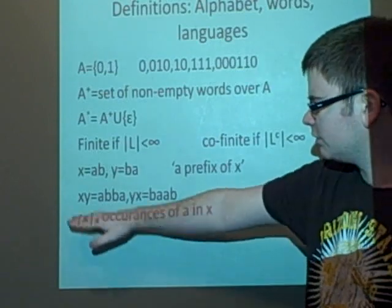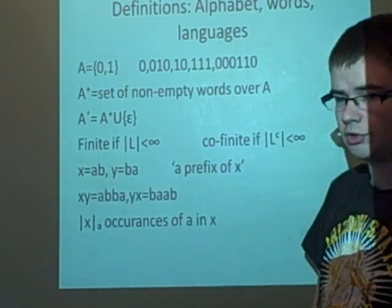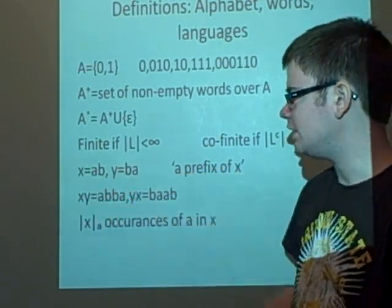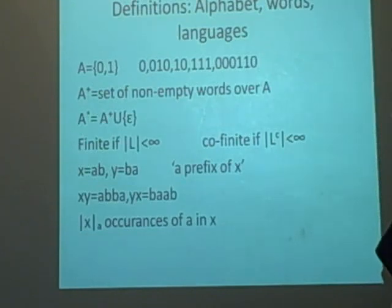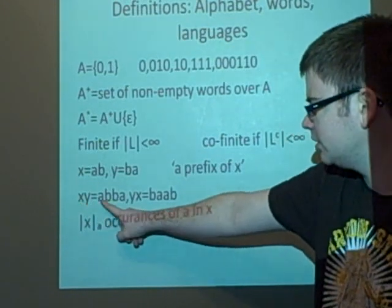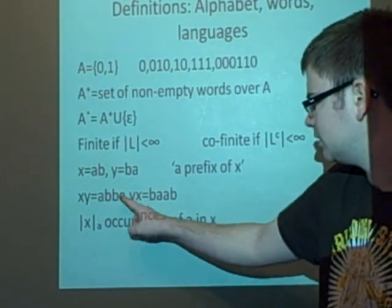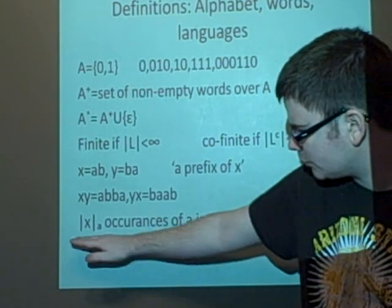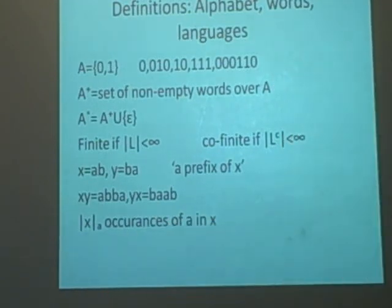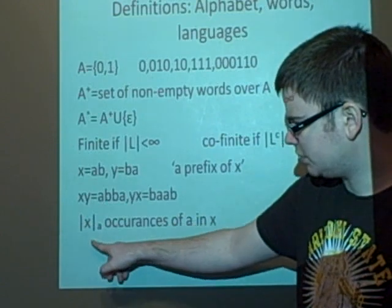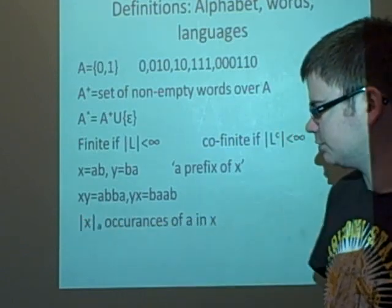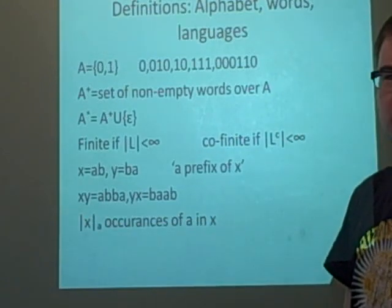This is to show what we can do with words. If we have a word x=ab and y=ba, then xy=abba and yx=baab, so they're not the same. Here, this notation shows how you find the number of occurrences of a in x. If we have |x|ₐ = 2, then it means there are two a's in x.